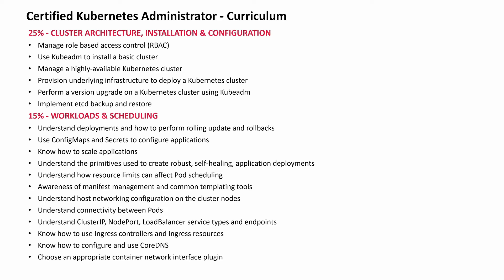Practice etcd backup and restore. 15% goes to workloads and scheduling: how deployment is working, how to do self-healing, manifest management such as JSON and YAML with common templating tools, pod networking, and understanding the cluster IP. You will also need to learn about Ingress controllers such as Nginx, F5 load balancer, how to work with Ingress resources, learn about CoreDNS, and choose the network interface plugin such as Flannel, WeaveNet, and others.